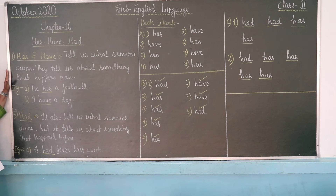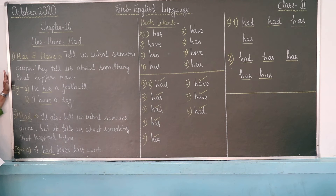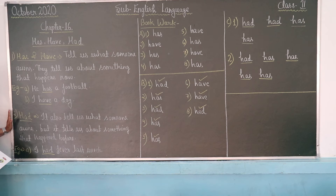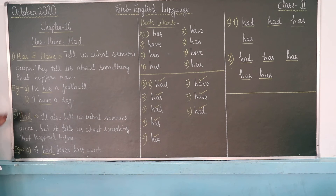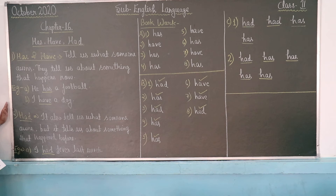Has and Have we use for the present tense, showing what someone currently owns. Had we use for past tense — things that were already owned or happened in the past.